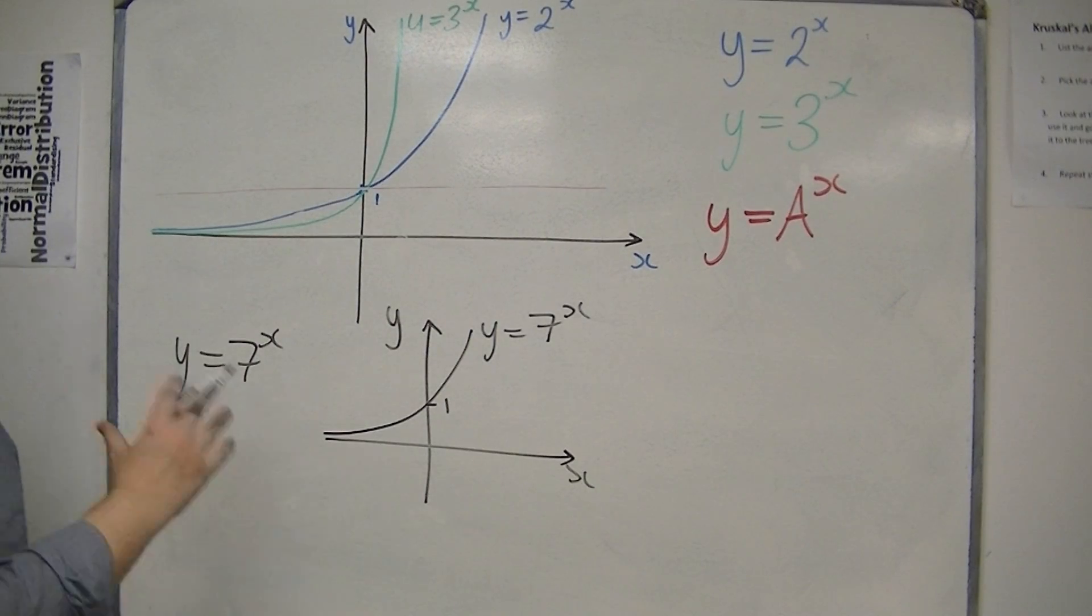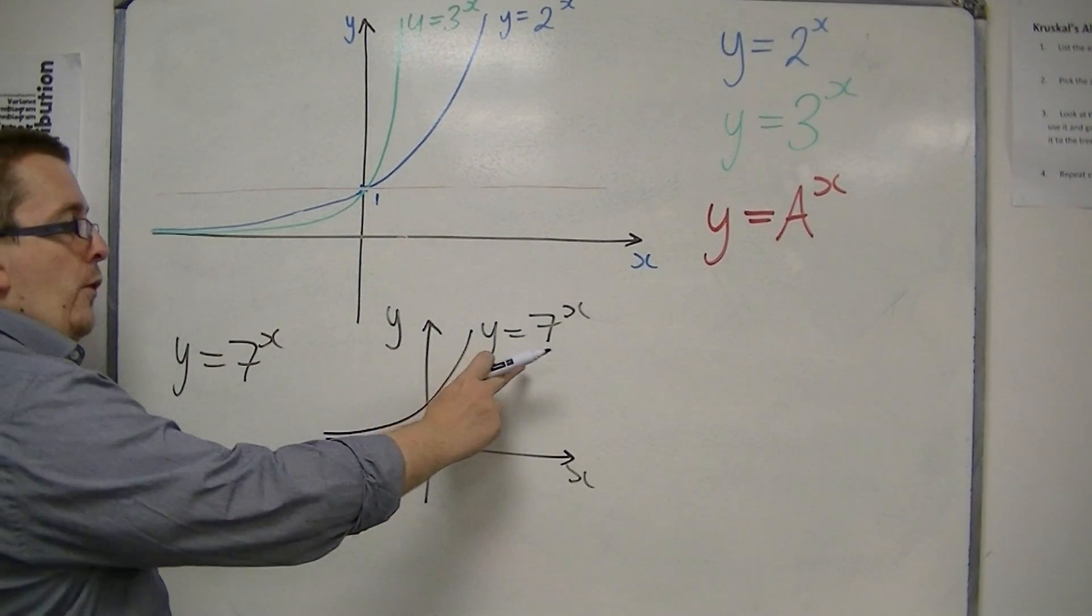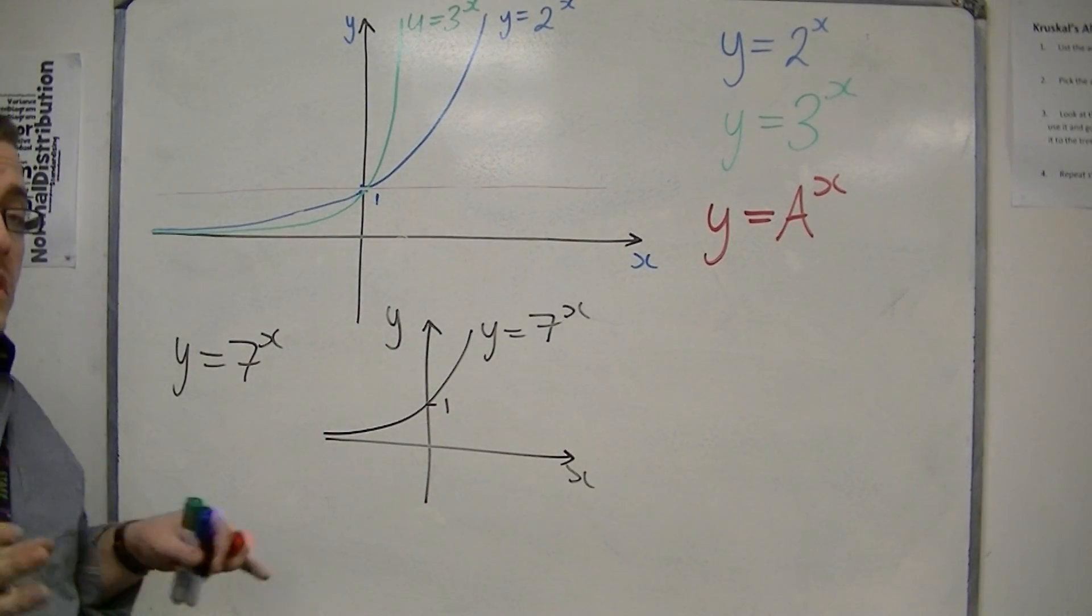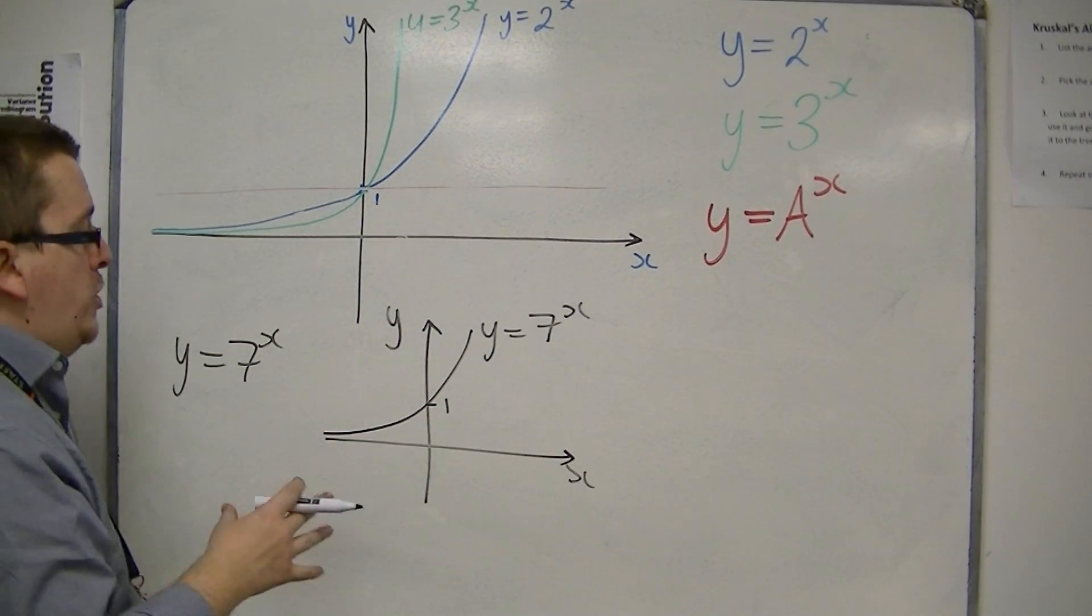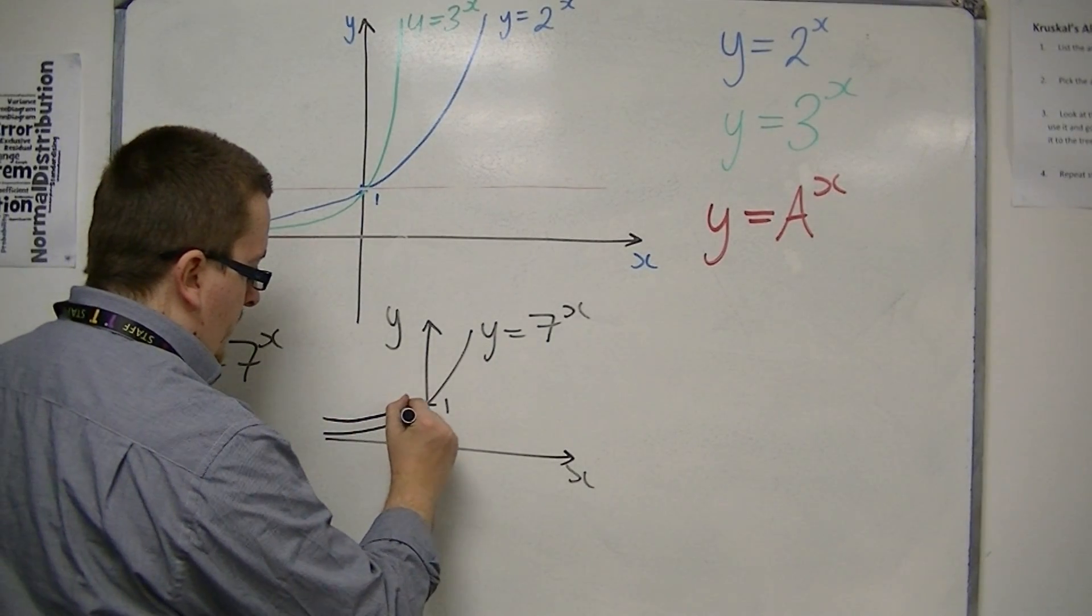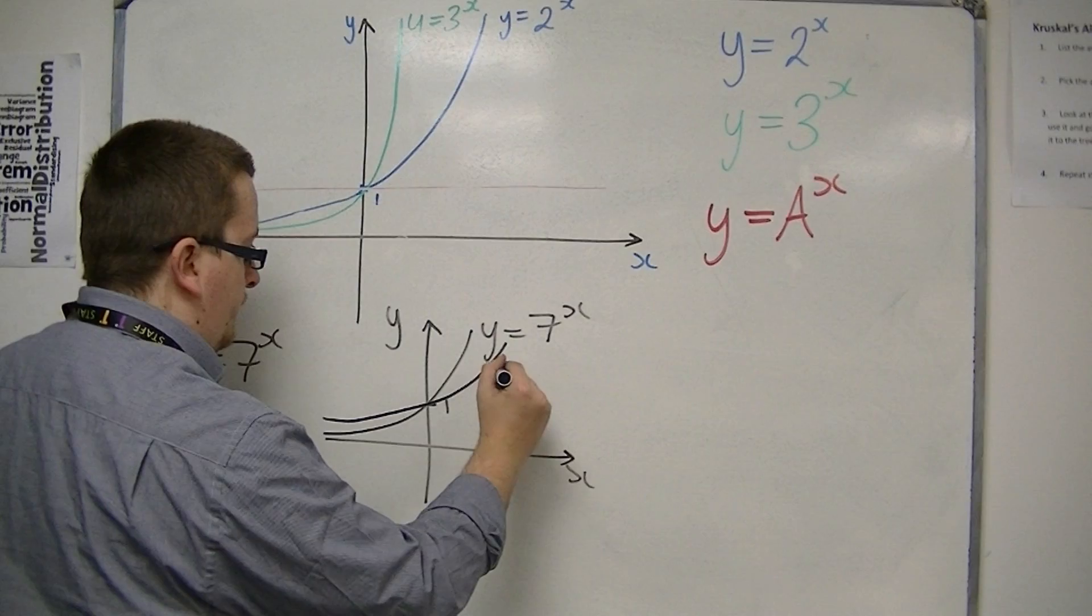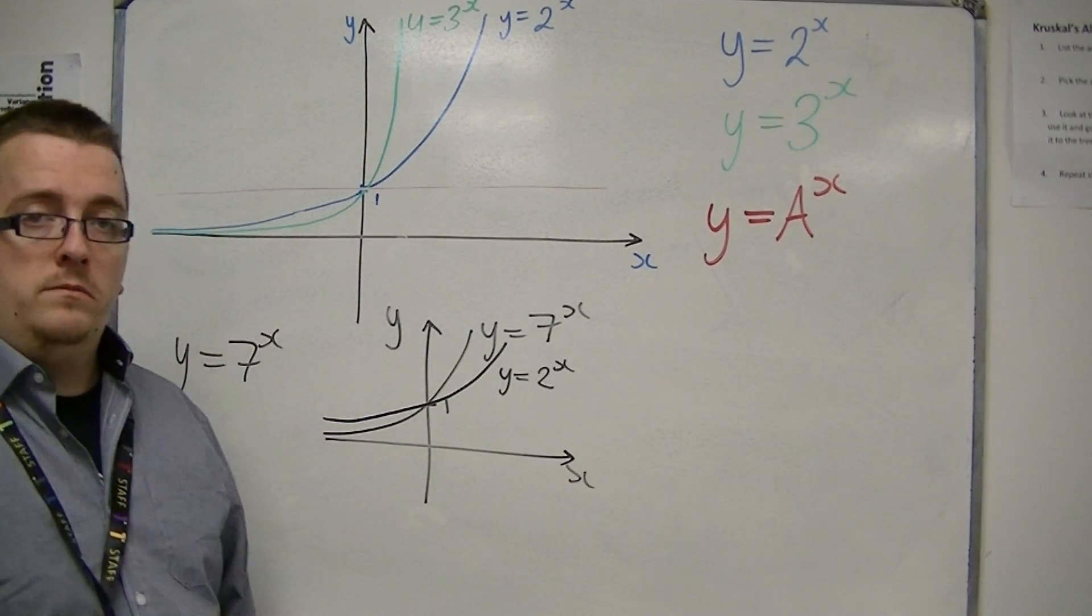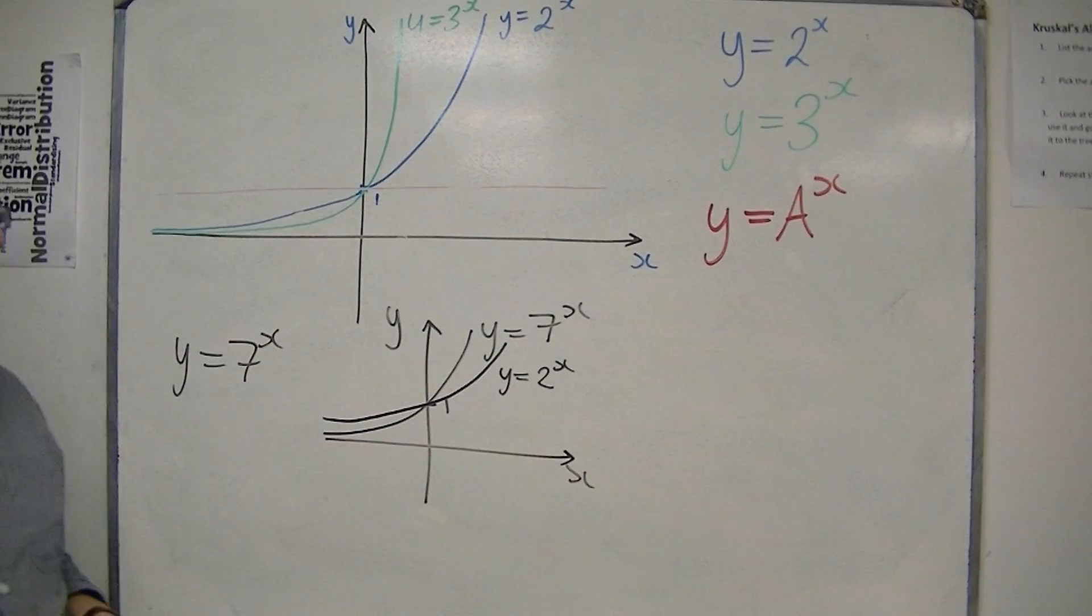I don't require a frame of reference to look at how this is different to y is equal to 2 to the x, unless I was asked to sketch both. In which case, y is equal to 2 to the x would look something like this. You just need to make the curve shallower, but still both of them going through 1.